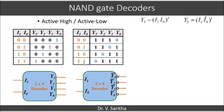Similarly y2 will be represented as i1 i0 bar whole bar, y1 as i1 bar i0 whole bar, and y0 as i1 bar i0 bar whole bar.